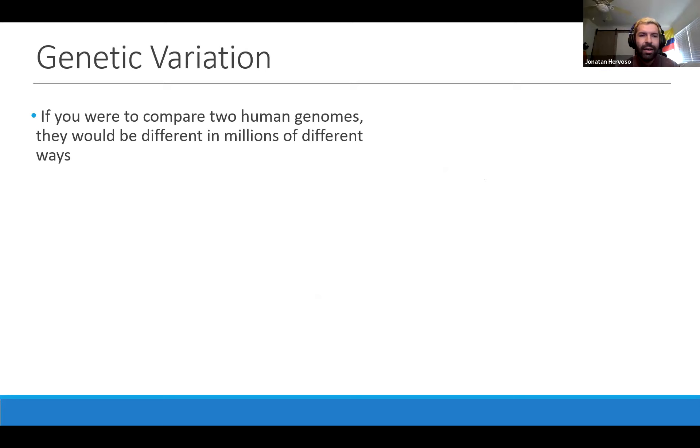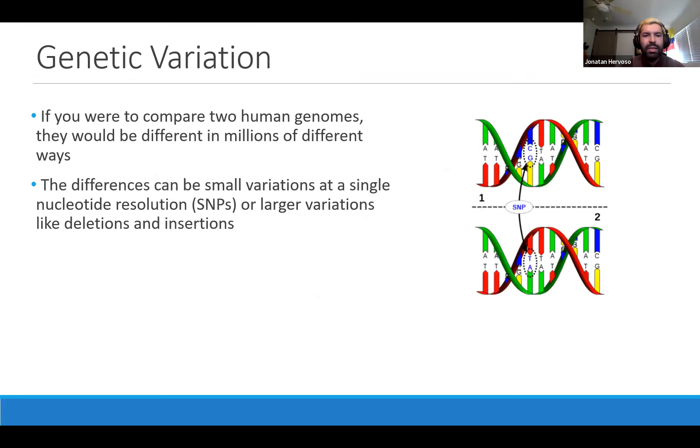Genetic variation - if you were to compare two humans, even if they were siblings, their genomes differ in millions of different ways. We can look at these differences in a multitude of ways. Some can be very small, at the single nucleotide resolution, called SNPs or SNVs, or they could be larger variations at the deletion insertion levels.